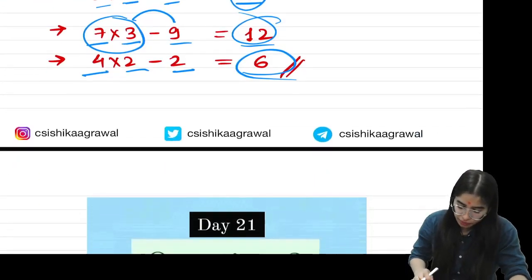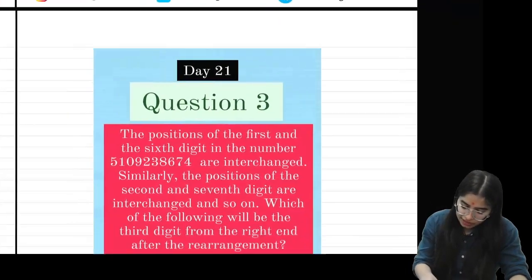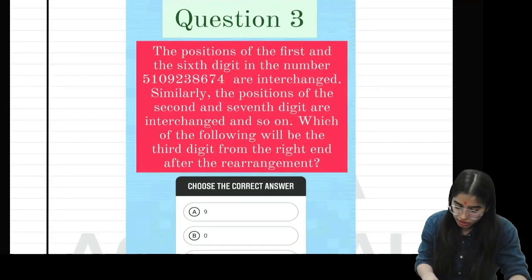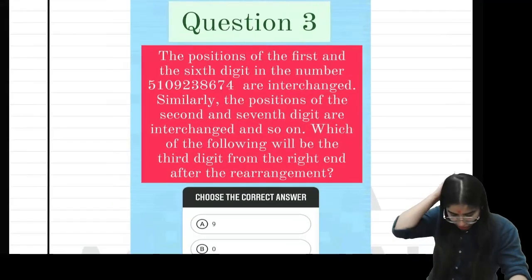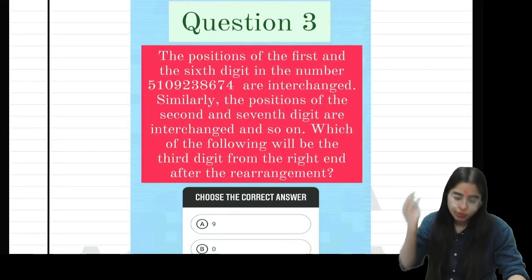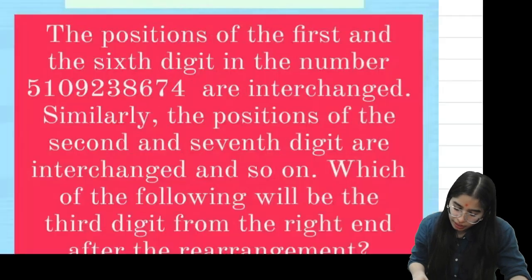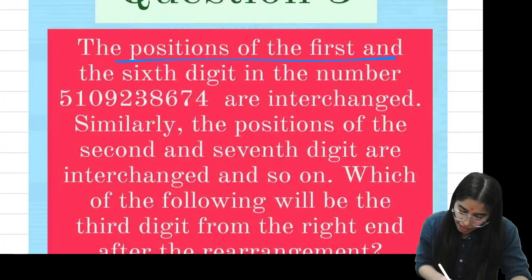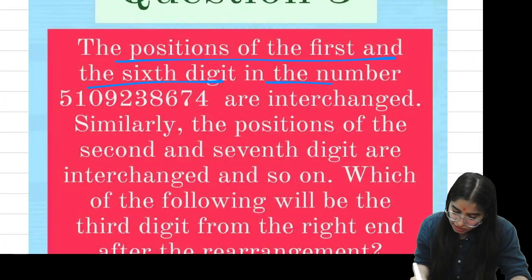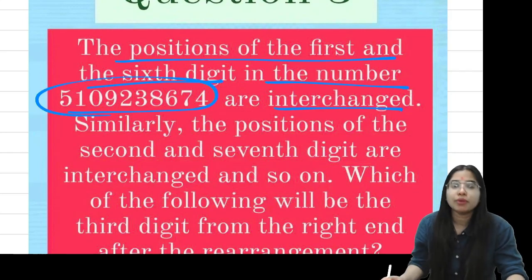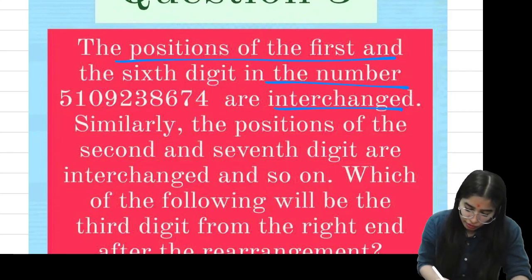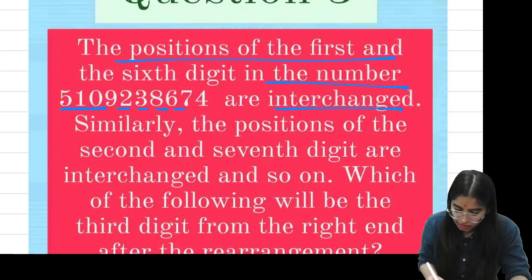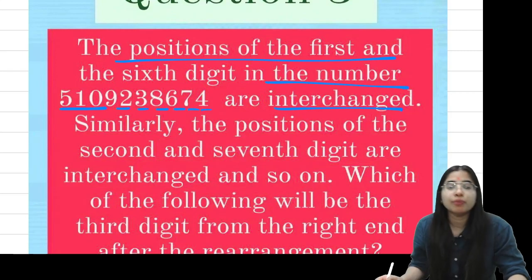Let's move on to the next question on your screen. This question is on the ranking test — actually it is a number test question. The position of the first and sixth digit in the number 510-923-8674 are interchanged.